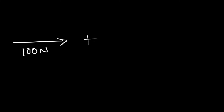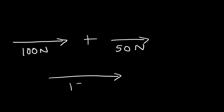If we want to add it to another force that's directed east as well, and let's say it's 50 N, the resultant sum of these two forces gives us a net force of 150 N. Whenever you have two vectors that are parallel to each other, you can simply add the numbers to get the resultant sum.